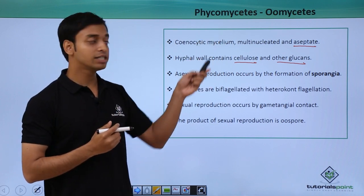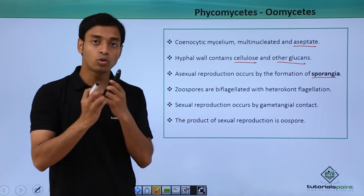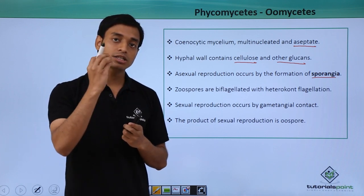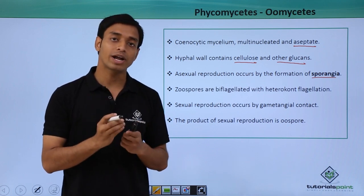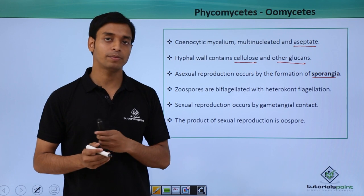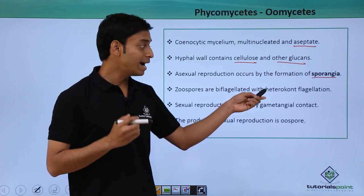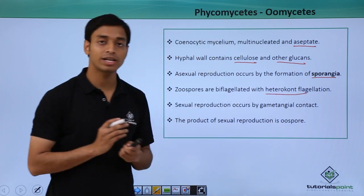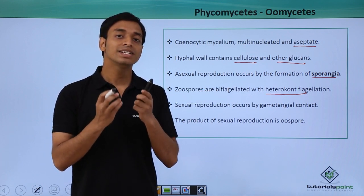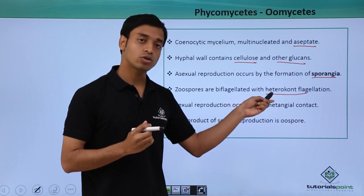Asexual reproduction in oomycetes occurs mostly by the formation of sporangia. These are spores formed by special structures, and the sporangia are mostly formed at the tip of the hyphae. These special tips are known as sporangiophores, where the sporangia or spores are formed for asexual reproduction. The zoospores are mostly biflagellated — meaning presence of two flagella — with heterokon flagellation, where one flagellum is smooth and the other is tinsel-textured.